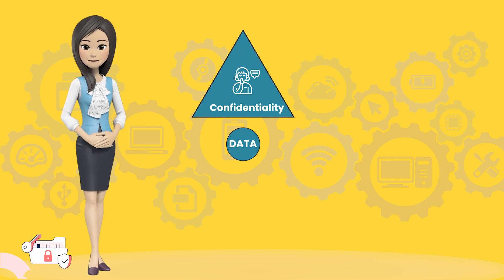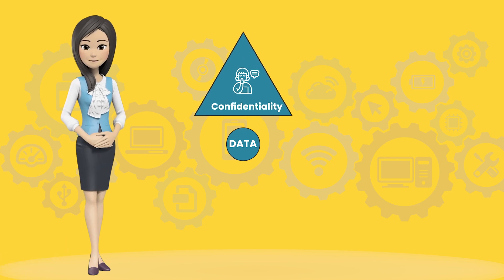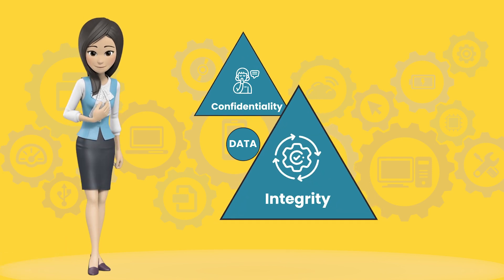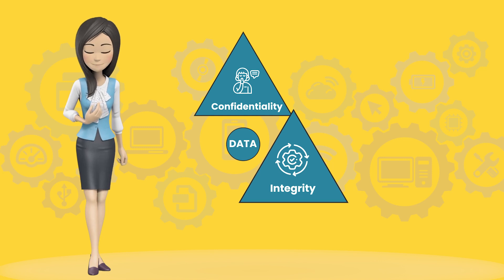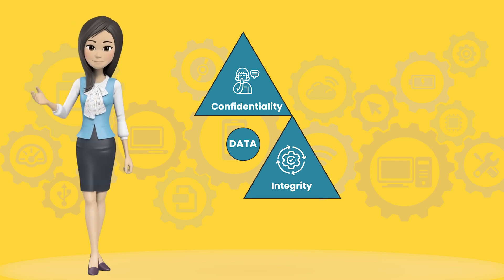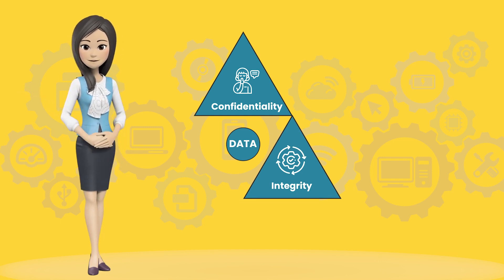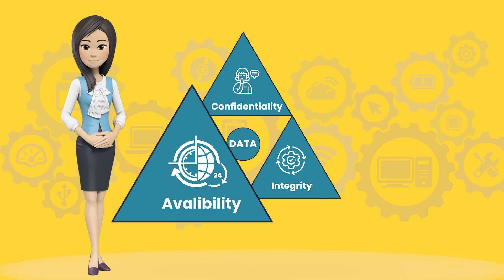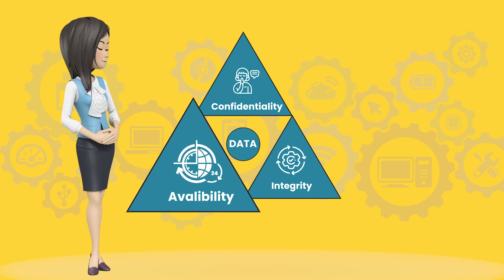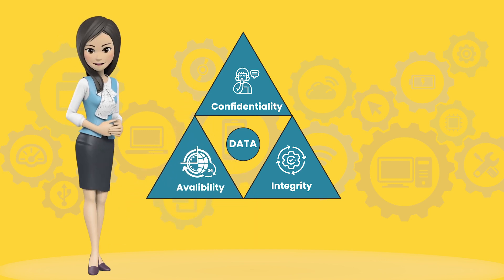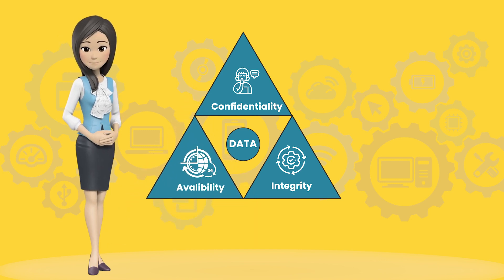Confidentiality measures are designed to protect against unauthorized disclosure of information. Integrity involves protection from unauthorized modifications — for example, adding, deleting, or changing data. The objective of availability is to ensure that data is available to be used when it is needed to make decisions.